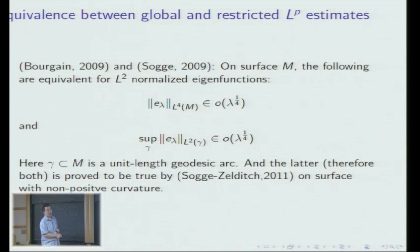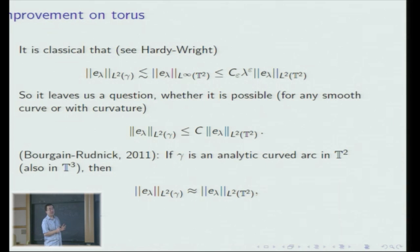Returning to torus: it is a classical result that the L-infinity norm of eigenfunctions on T2 is bounded by an epsilon power. We naturally have an L2 restricted bound for eigenfunctions on such torus. This leaves us a question: whether it is possible to prove similarly a uniform restricted bound on T2 for a general smooth curve, or perhaps for a curve with curvature.